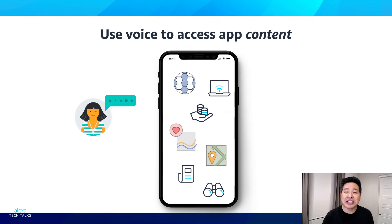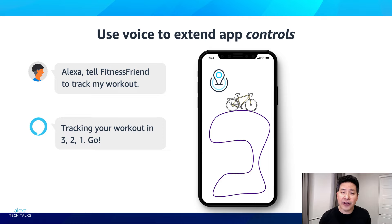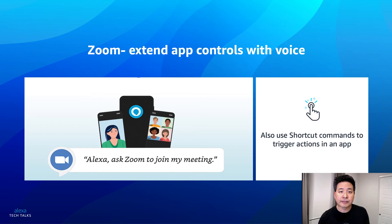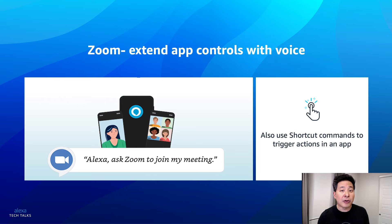These are examples of how Alexa shortcuts voice commands work great for accessing content in apps. But they can also be used to trigger functionality to control an app. In this case, a customer asks the app to start tracking their workout. The Zoom skill for Alexa lets customers control the app with their voice — letting them join meetings, start their own meetings, and show what's on their calendar.